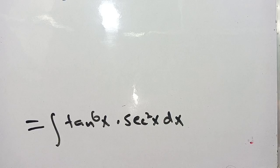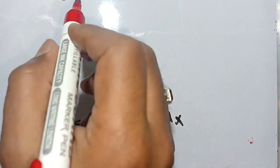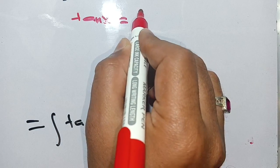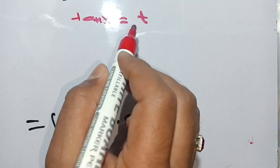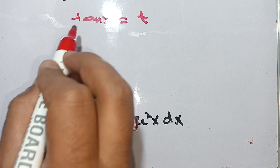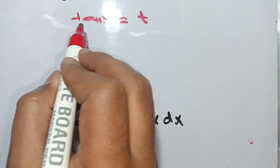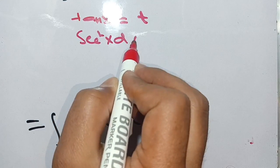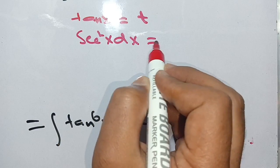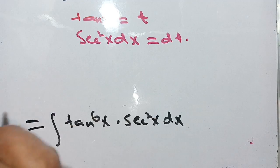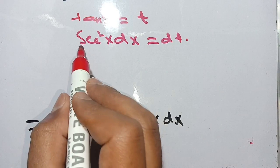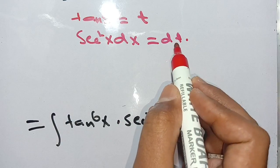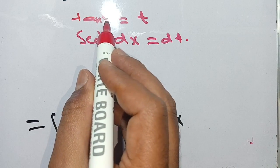In the next step, let us suppose that tan(x) is equal to t. On differentiation, it becomes sec²(x) dx = dt. This means in place of sec²(x) dx we put dt, and in place of tan(x) we put t.